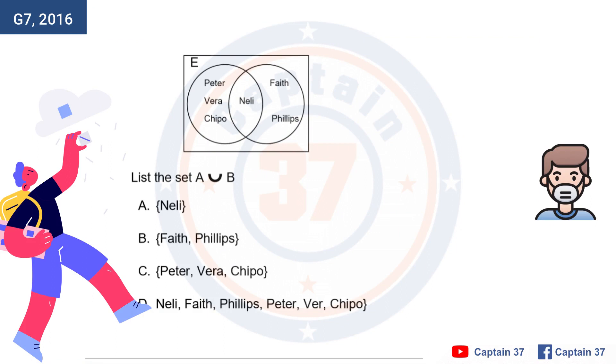Question number 5. The diagram below shows sets A and B. This should be A, and this one is B.